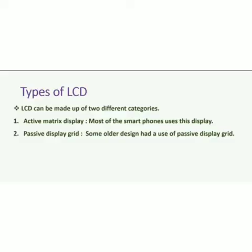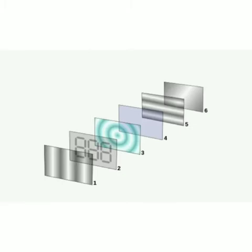Types of LCD: LCD can be made up of two different categories — active matrix display, which most smartphones use, and passive matrix grid, which some older designs used.